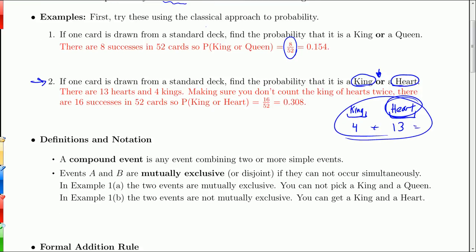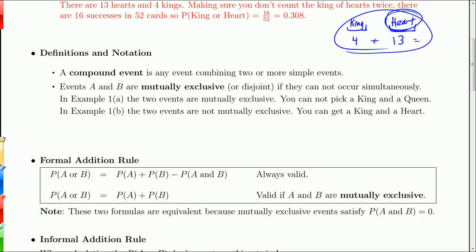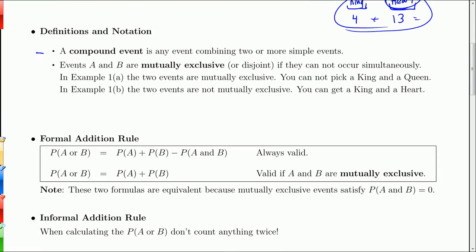Here's the official formula — the official way to calculate probabilities involving the word 'or.' A compound event is any event combining two or more simple events, such as getting a king or a queen. The formula depends on whether or not these events can occur simultaneously. Two events A and B are mutually exclusive — the other word for that is disjoint — if they cannot occur simultaneously.